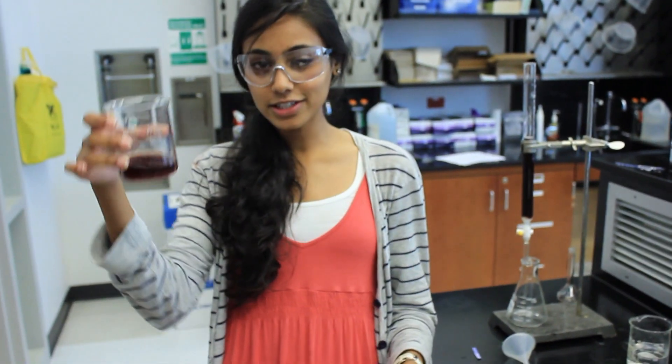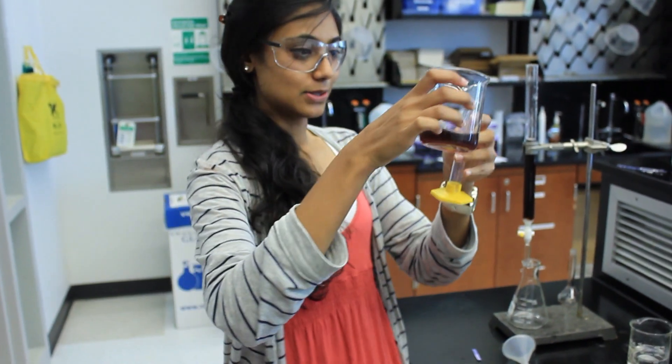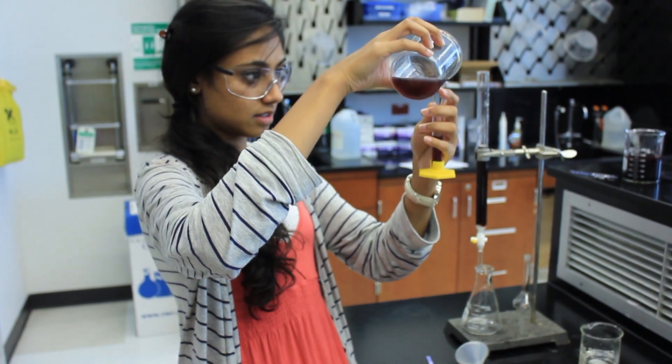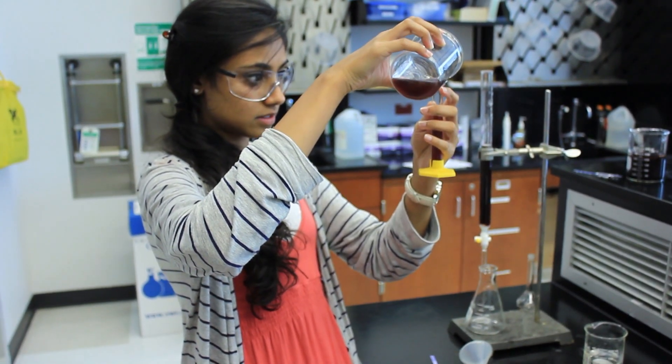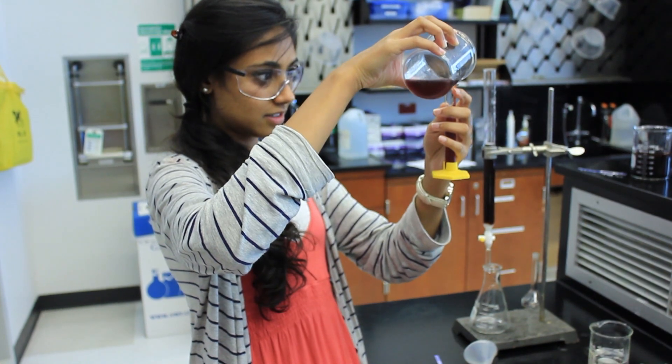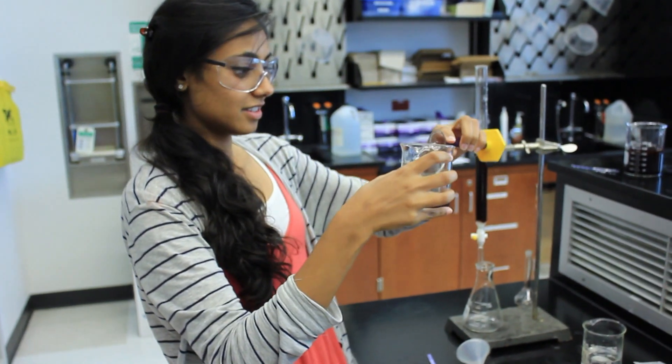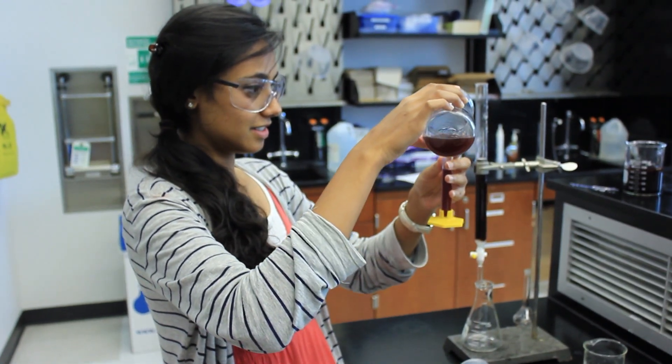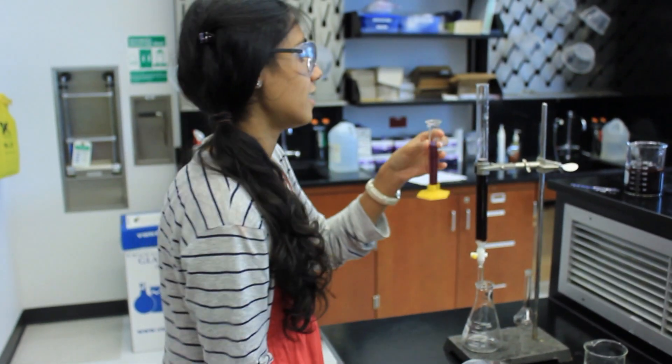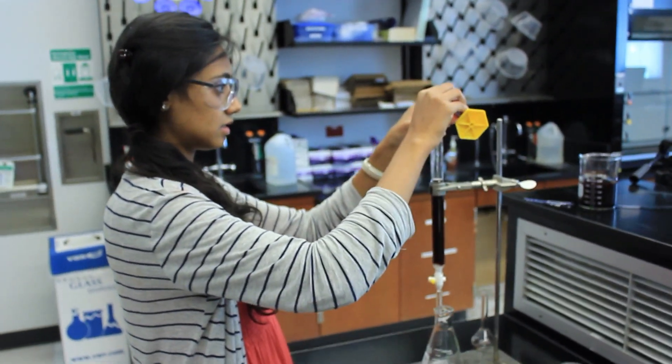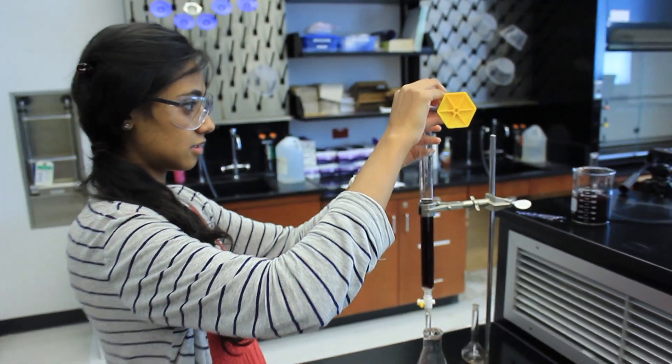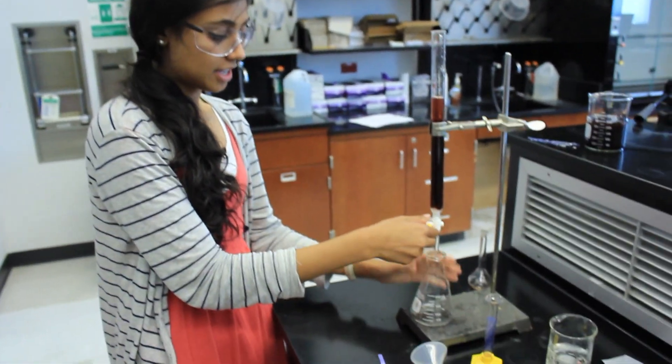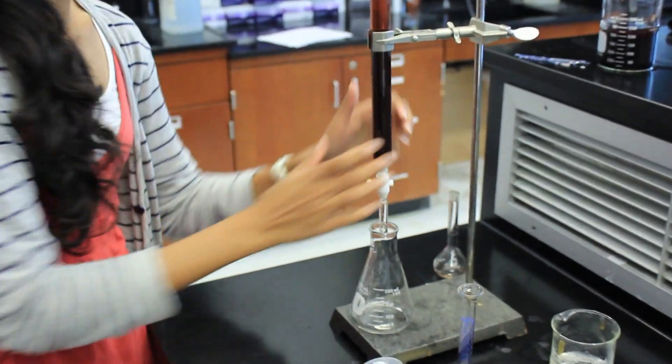Now we're going to take 10 milliliters of our reduced green crystal solution and put it into our graduated cylinder. You're just going to pour it right on top of your column. And you're going to let this flow through until your solution is neutral.